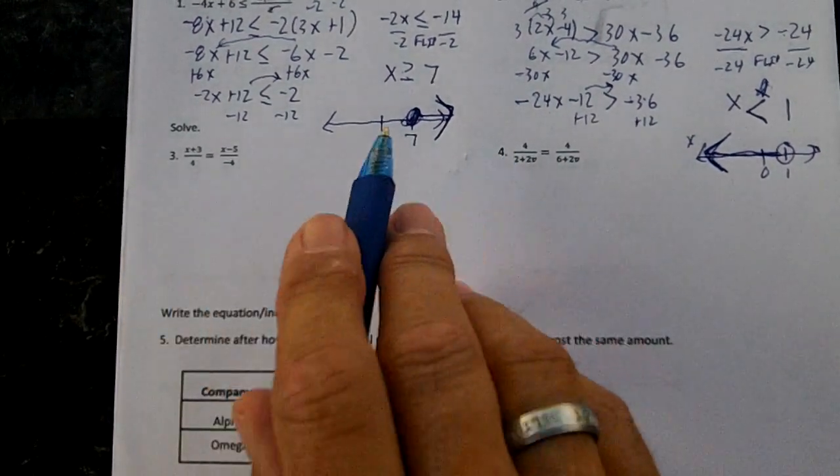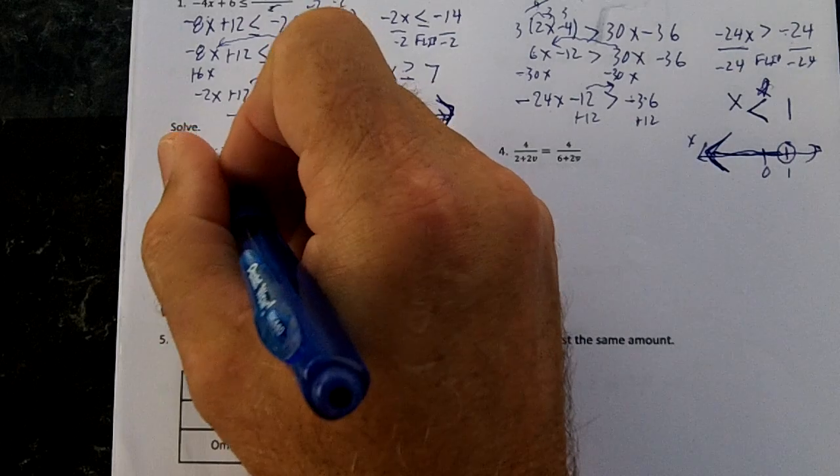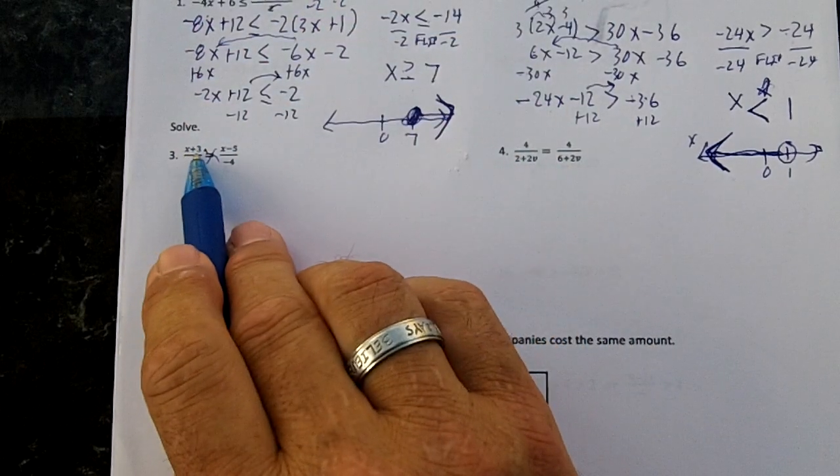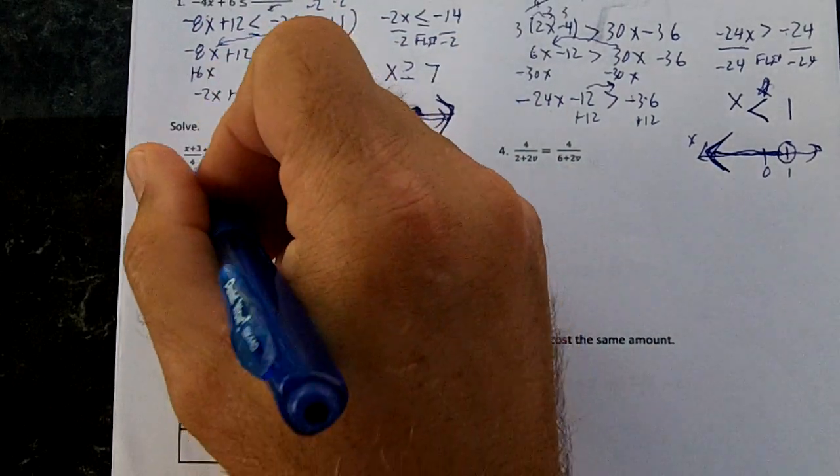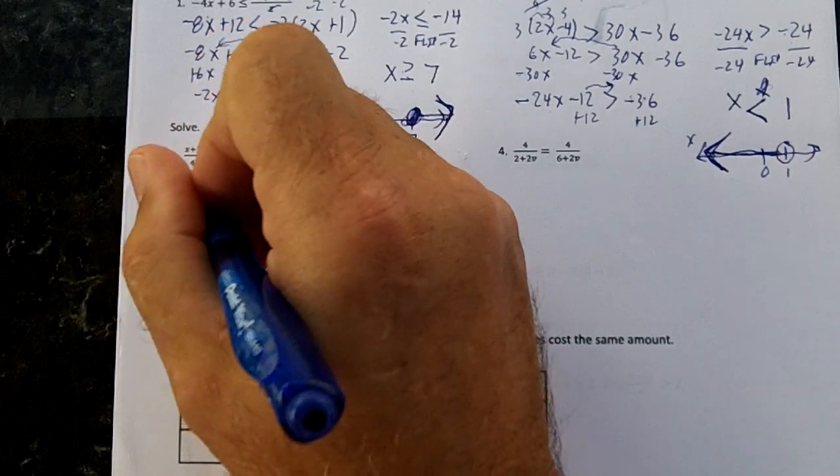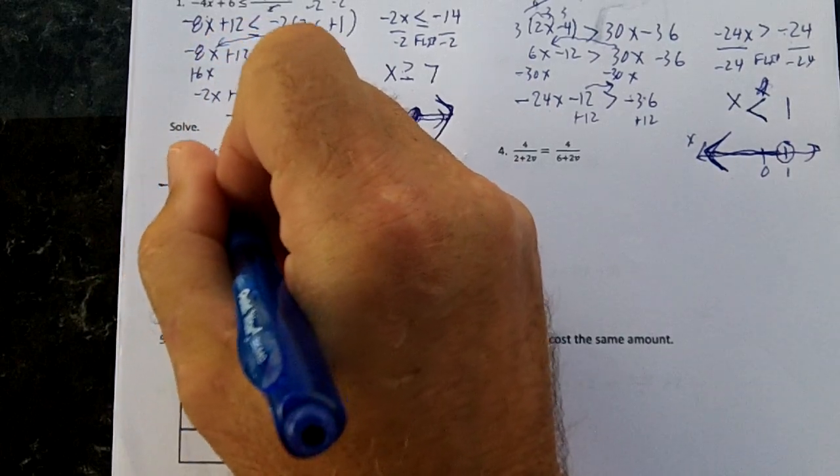Number 3 and 4, we're going to solve proportions, so we're going to cross-multiply. I'm going to take x plus 3 and multiply it by negative 4. So to show that, I'm going to do negative 4 times x plus 3 equals.